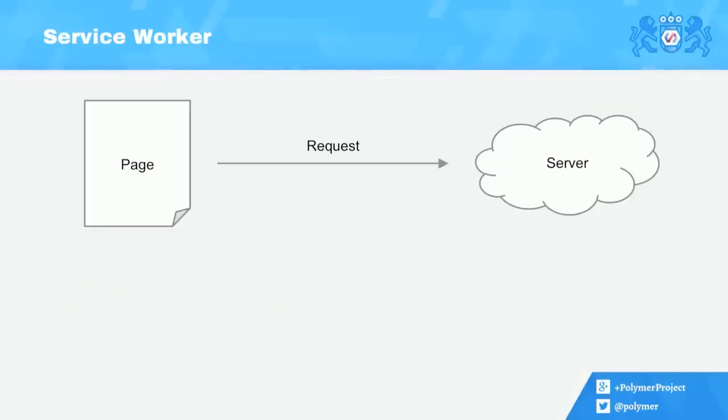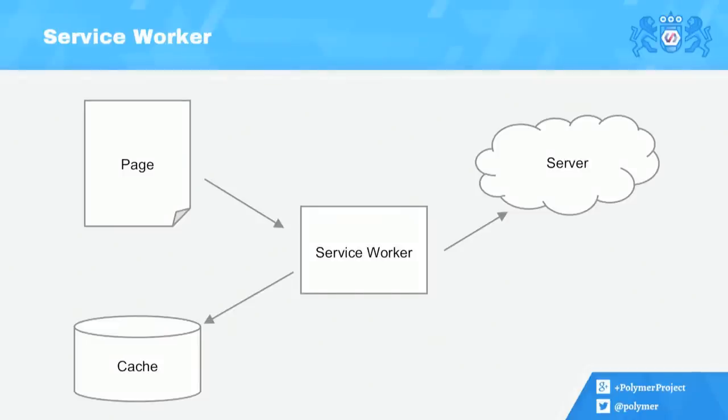How does this work? Normally you have a page and it requests resources, and it just goes to the network to fetch them. With Service Worker, you add this intermediary — a script that you've written. Any time the page requests a resource — this could be the initial page navigation, images, scripts, CSS, XHR, or fetch — the Service Worker gets to say what to do. It can go to the network and fetch from the server if it wants to. But there's also a Cache API built in with Service Workers that stores request and response pairs. You can seed that cache with the requests for your resources and just return those instead, never going to the network.